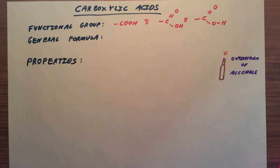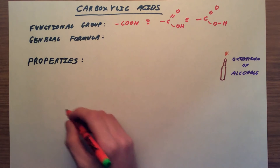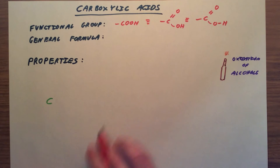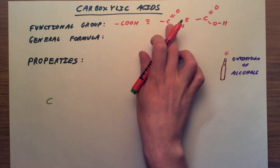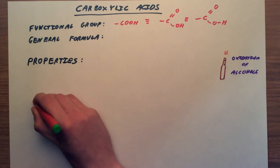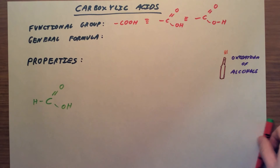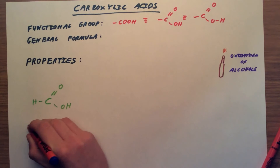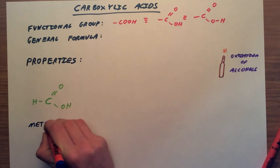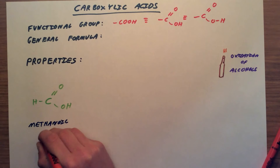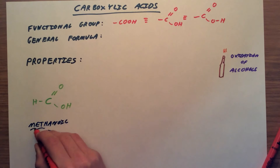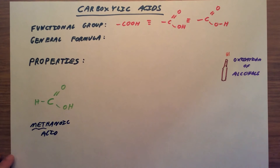We need to be able to name and draw at least the first few of these. They are all part of one homologous series — the same group of compounds. The first carboxylic acid is going to have one carbon atom. If you look at the functional group C double bond O and OH, we actually only have one carbon atom. So the first carboxylic acid is called methanoic acid, where 'meth' comes from the fact that we've only got one carbon atom.